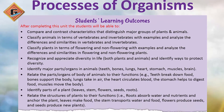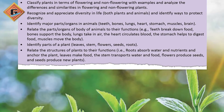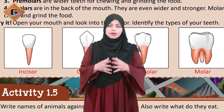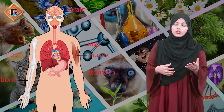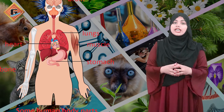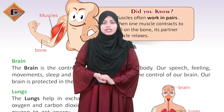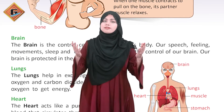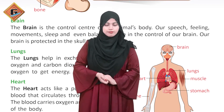Iske saath hi, diversity ko completely introduce karwane ke baad, aap ne students ko organs ki taraf leke jana hai. Organ system aur organ ka concept introduce karwana hai jiske liye — teeth, bones, lungs, stomach — ye sab hamare organs hain. Aur ye kya kya function karte hain, aap students ko batayengi aur interest develop karengi. Cross questioning kar sakti hain, jaise: hamaara khaana kis tarah se hazam hota hai?